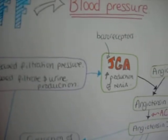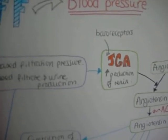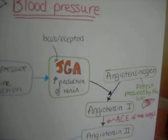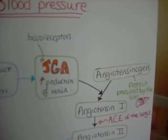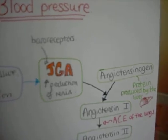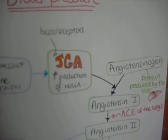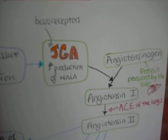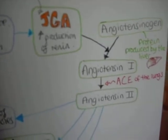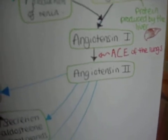When that happens, the JGA increases the production of renin. Angiotensinogen, a protein produced by the liver, is then converted by renin to angiotensin 1, which is then converted by angiotensin converting enzyme of the lungs to angiotensin 2.